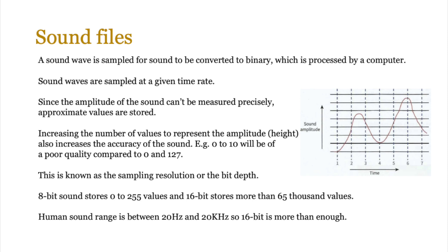This is known as the bit depth or sampling resolution — the number of bits used to record each sound sample. Using 8 bits means we can store between 0 and 255 values. Using 16 bits, we can store more than 65,000 values, so 16-bit sound will sound better than 8-bit sound. The human hearing range is between 20 Hz and 20 kHz, so 16-bit is more than enough to fit all frequencies the human ear can handle. You don't need 32 bits for sound — that would be overkill.